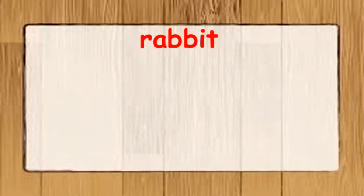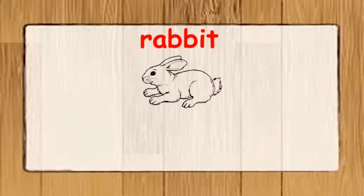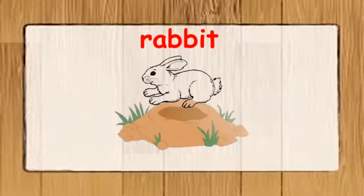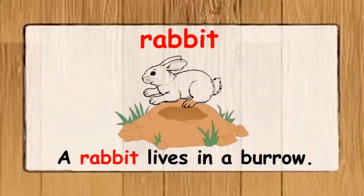The word is rabbit. Children, look at the word and repeat it after me. Rabbit is a plant-eating animal with long ears and short tail. Rabbits are fond of eating carrots. I have used the word rabbit in a sentence: a rabbit lives in a burrow.